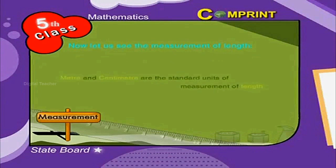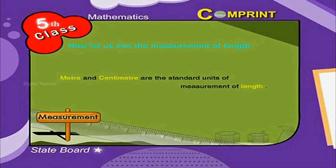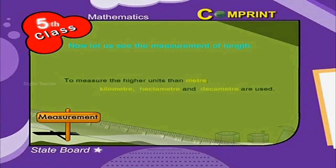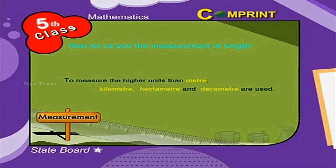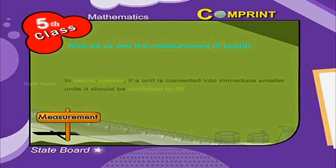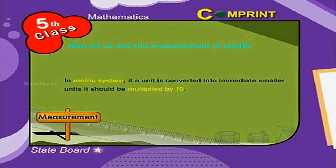Meter and centimeter are the standard units of measurement of length. To measure higher units than meter, kilometer, hectometer, and decameter are used. In the metric system, if a unit is converted into the immediate smaller unit, it should be multiplied by ten.